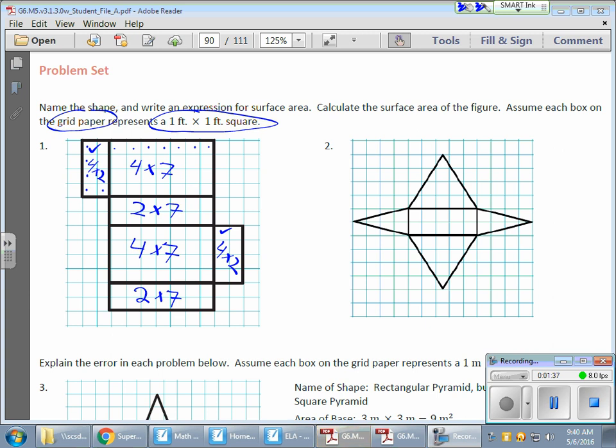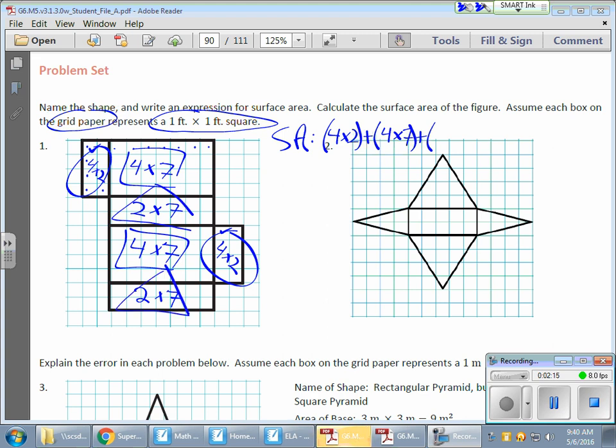And I'm ready to go. What I want to do is write an entire expression to show the surface area. So I'm going to use SA for my surface area, and I'm just going to show all of these products that I need to add together. Now, a couple of ways I can do this - I can actually list all of these out. But then I realize I actually have a couple of duplicates. I have two of these guys, the four by twos, and I have two four by sevens, and I have two two by sevens.